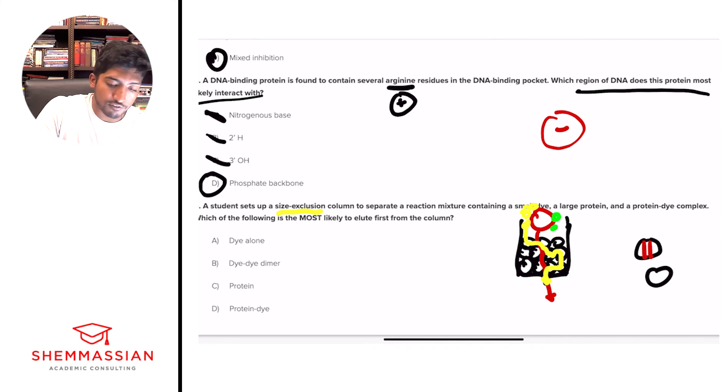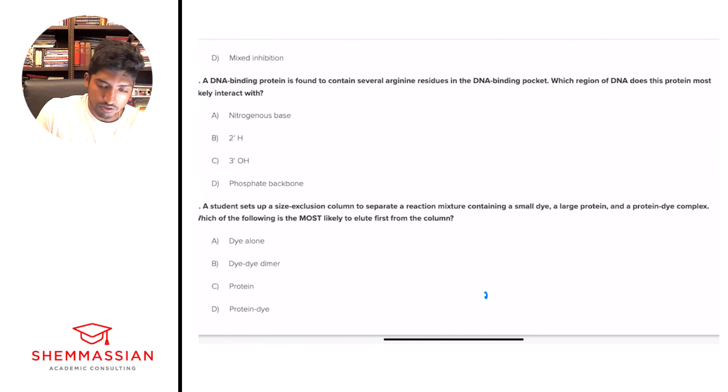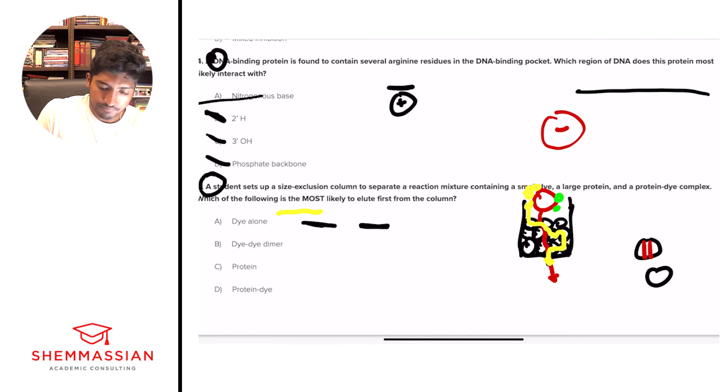So right away, now that we know that, what are we looking for? We're looking for what's most likely to elute first. Elute first means the biggest molecule, right? So what are we dealing with in this situation? So, what are we dealing with here? Well, we have a small dye, a large protein, and a protein dye complex. So if we were to look at this in terms of size, what's the smallest? Right?